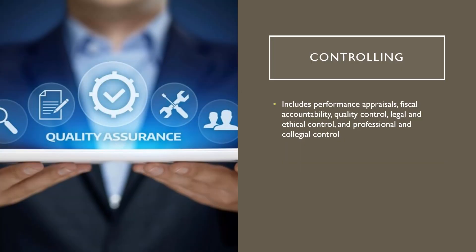The final phase is controlling. In this phase, performance is measured against predetermined standards, and action is taken to correct any discrepancies between the standards and actual performance. This includes performance appraisals, fiscal accountability, quality control, legal and ethical control, and professional collegial control.